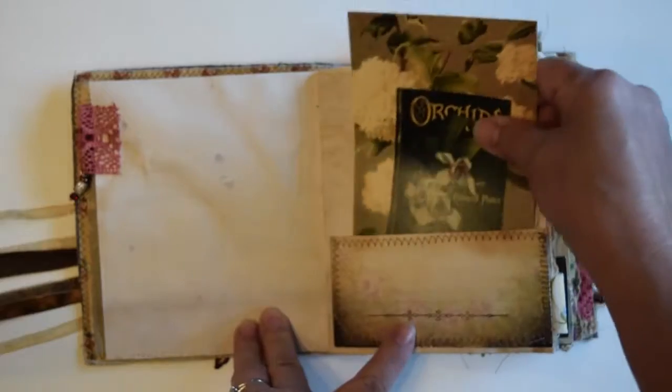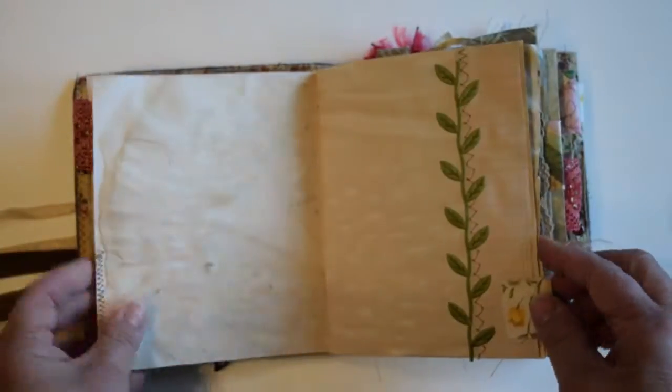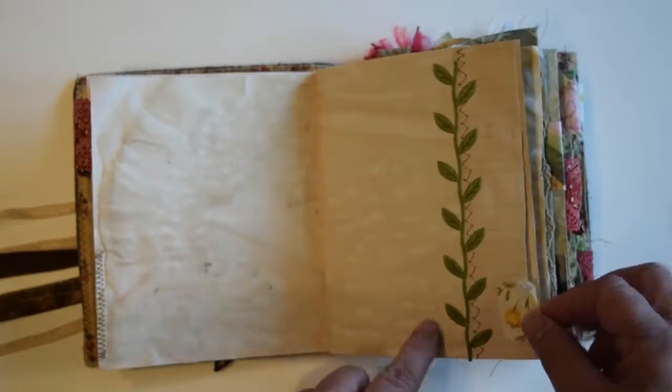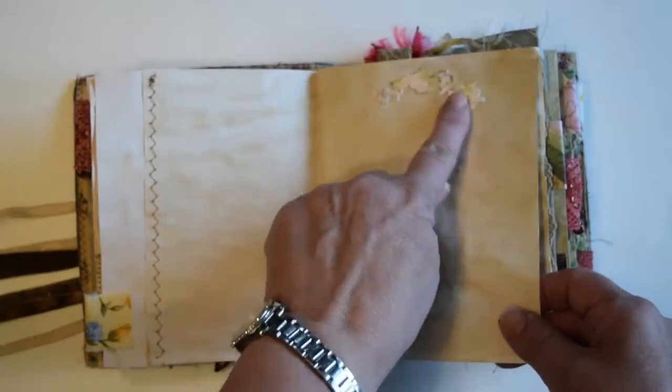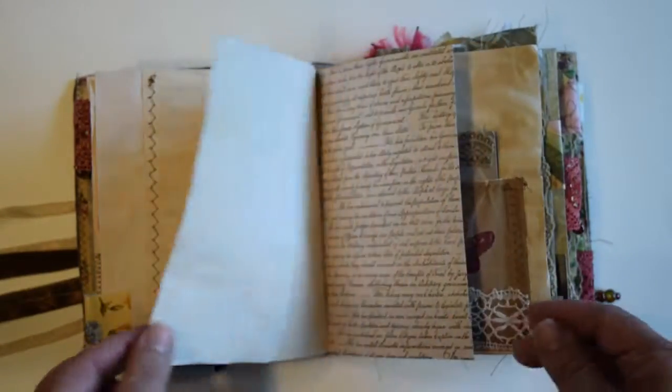Open it up. There's a pocket, ephemera, some trim, and a fabric tab. A little spray of flowers there.